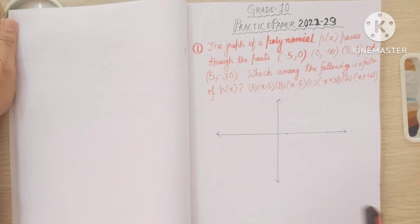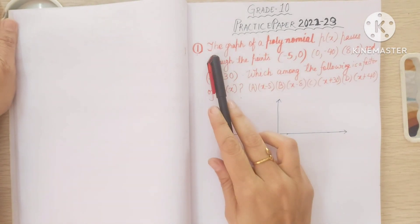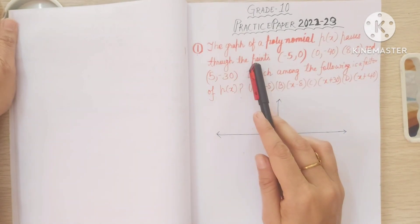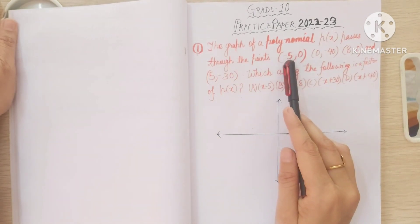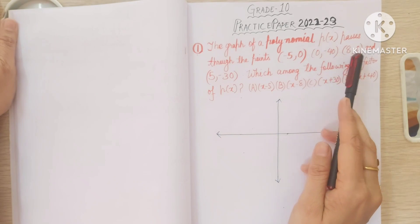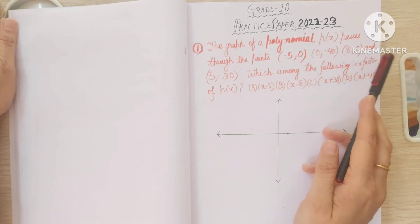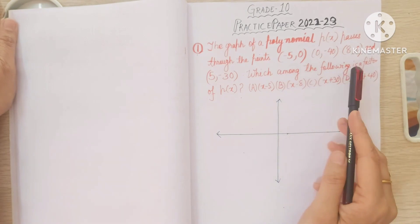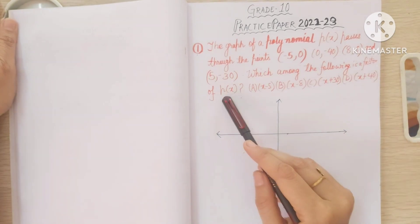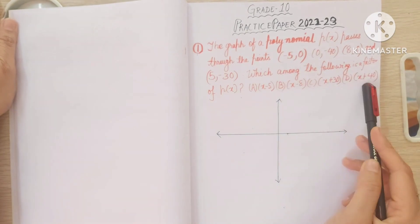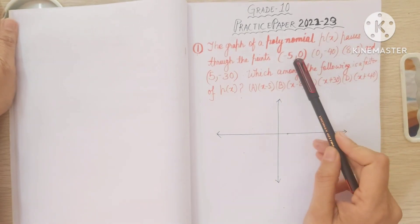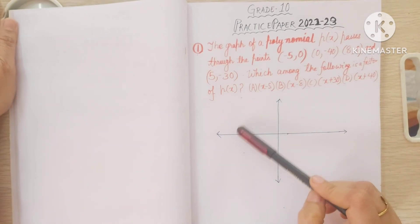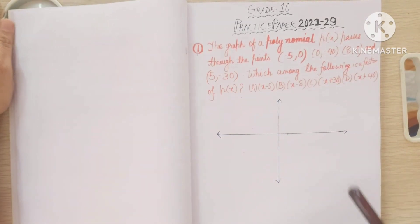I've taken the first question and I'm reading it out: 'The graph of a polynomial p(x) passes through the points minus 5 comma 0, 0 comma minus 48, 8 comma 0, and 5 comma minus 30. Which among the following is a factor of p(x)?' We have been given options. So first, we mark all these points on the graph.